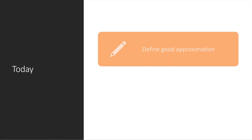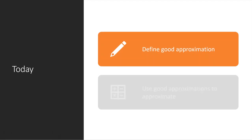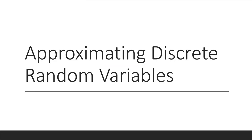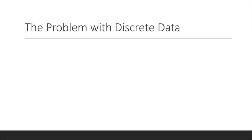Today we're going to be finishing section 4.1. By the end of today you're going to be able to define what a good approximation is, and you're going to be able to use good approximations to approximate. Today we're going to be approximating discrete random variables.